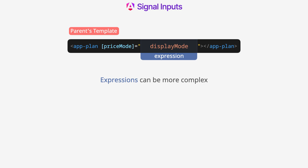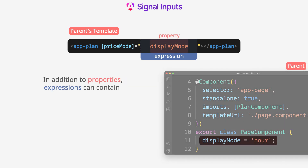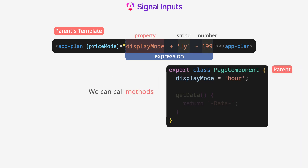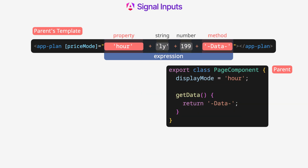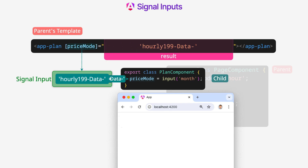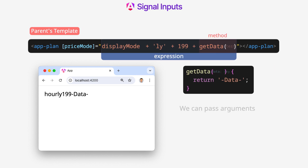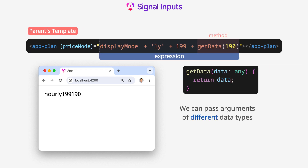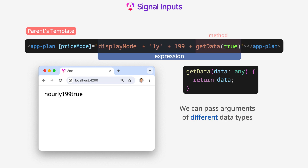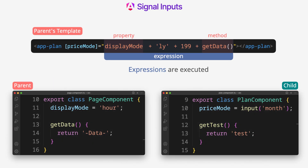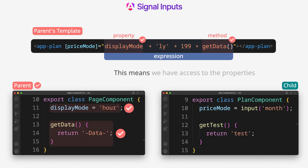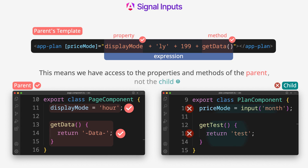Expressions can be more complex. In addition to properties, expressions can contain strings, numbers, and other data types. We can call methods of the component, pass arguments of different data types, and component properties can be passed as arguments. Expressions are executed in the context of the parent component, which means we have access to the properties and methods of the parent, not the child. We can also use the conditional operator.